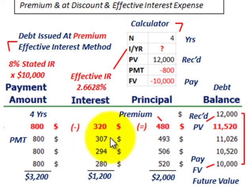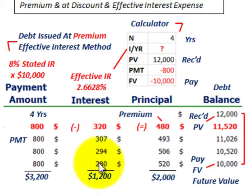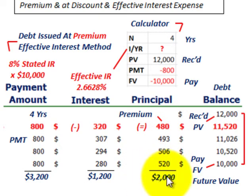To determine amortization for the next period, take the new balance of $11,520 times the effective interest rate to get the next period's interest expense, then compare that to your cash payment. The rationale behind the effective interest method is that your interest expense decreases each year — from $320 in year one down to $280 the next year — as the balance reduces from $12,000 down to $10,000. The total effective interest paid is $1,200 compared to $3,200 in cash payments, with the $2,000 difference being the premium amortized.